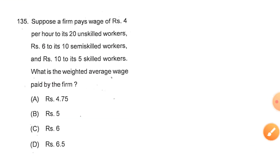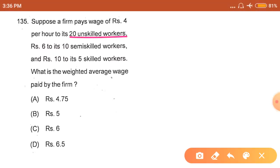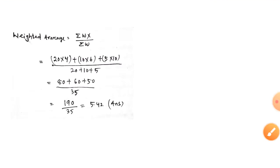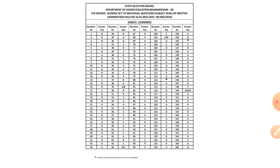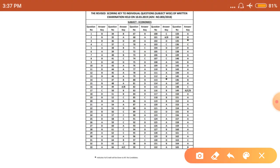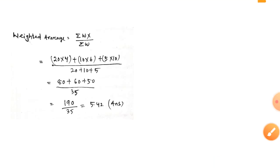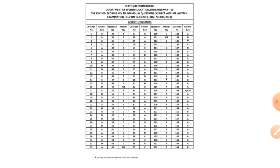Suppose a firm pays wage of rupees 4 per hour to its 20 unskilled workers, 6 to its 10 semi-skilled workers, and rupees 10 to its 5 skilled workers. Then what is the weighted average wage paid by the firm? Here is the solution, but this solution is not given in the options because this has wrong options. As you can see from the revised answer key of SSB, question number 135 has a star mark, meaning this has wrong options. The answer is 5.42.